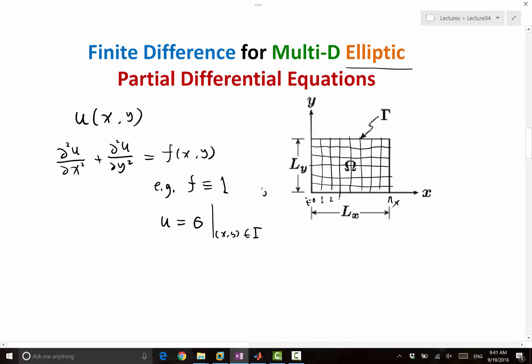And the second dimension, we use j. So j equal to 0, 1, 2, 3, and all the way to ny. So we have nx intervals in x dimension. We have ny intervals in y dimension. So the number of grid points including the boundary is nx plus 1 and ny plus 1. Excluding the boundaries is nx minus 1 and ny minus 1.